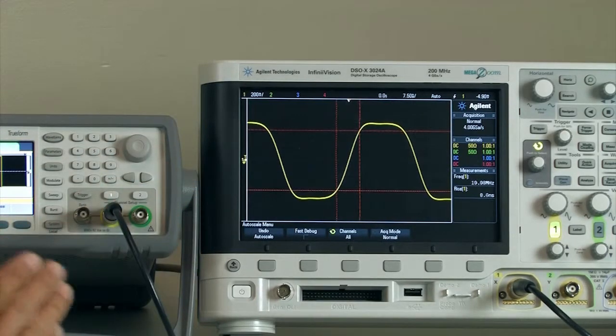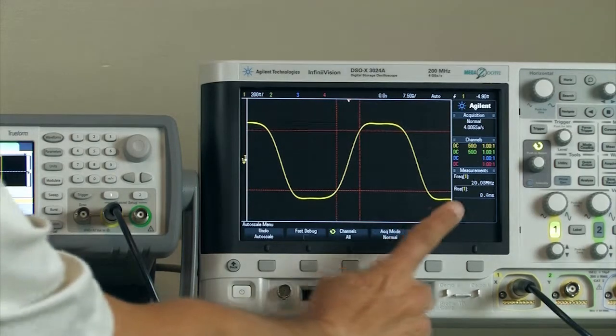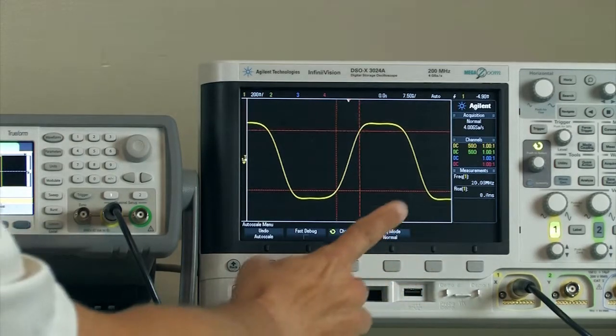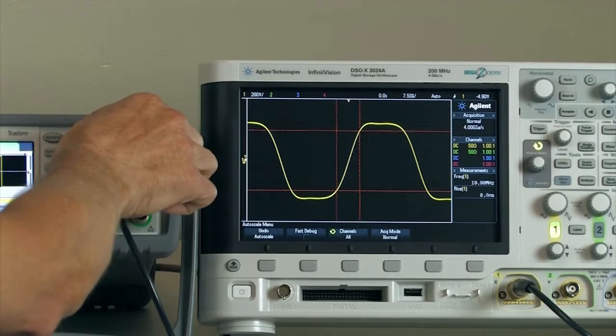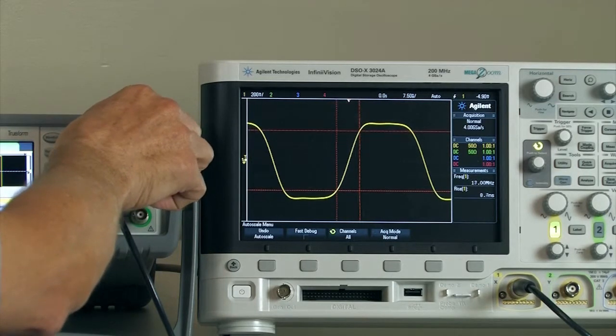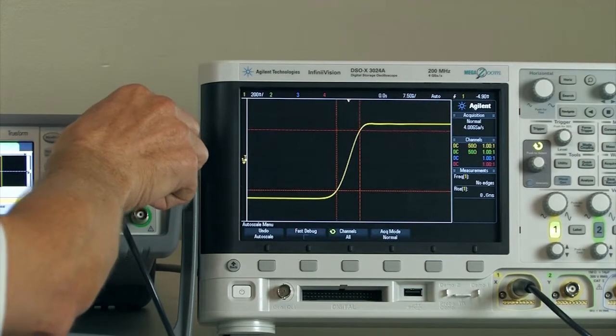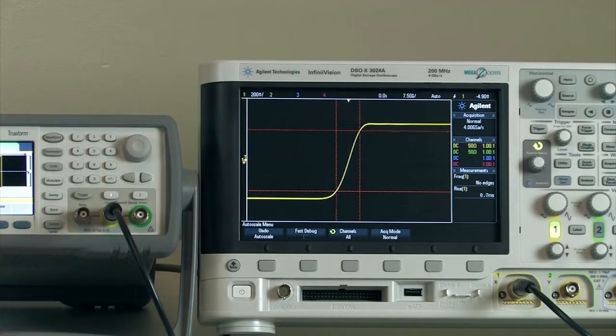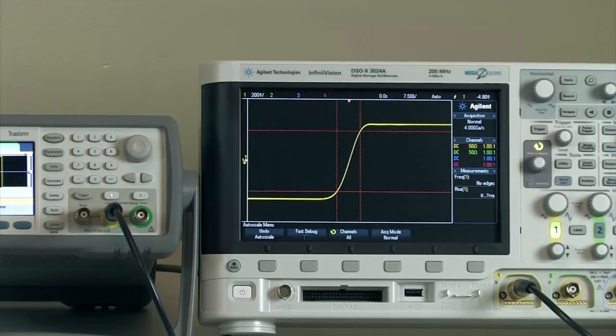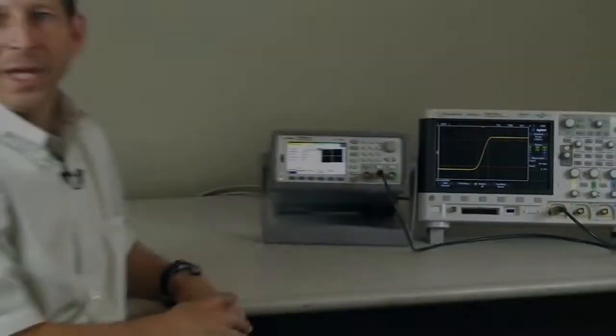I'm now at 20 megahertz on the oscilloscope. I'll actually turn the frequency back down so you can take a look again at how we maintain the edge time and the overshoot. So the square wave behaves the same way from a timing standpoint independent of its frequency.